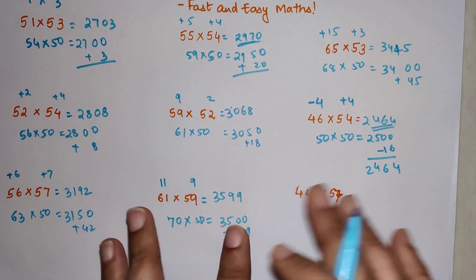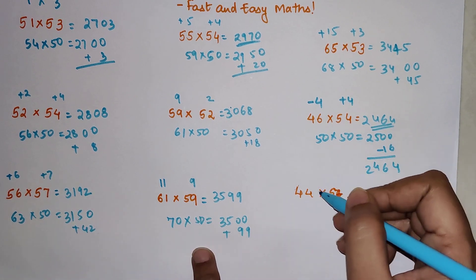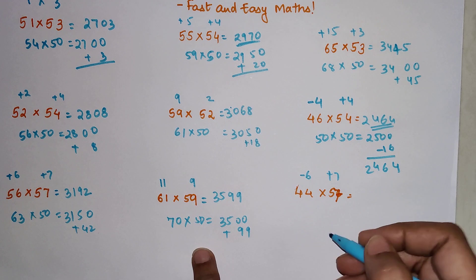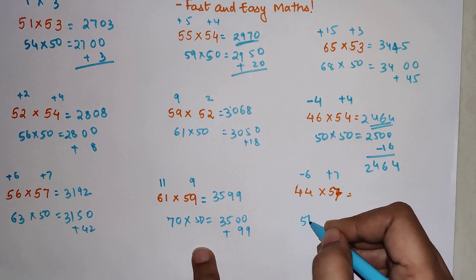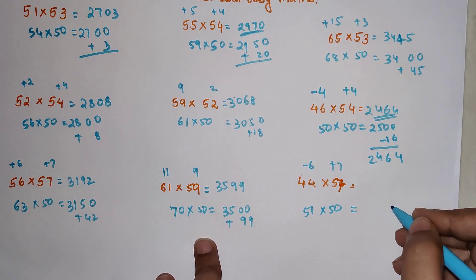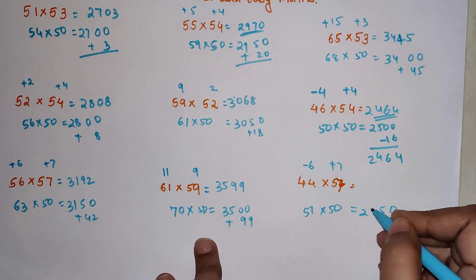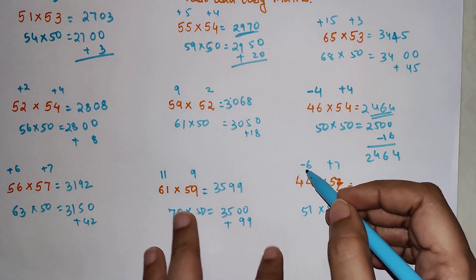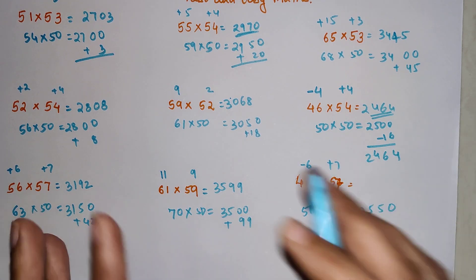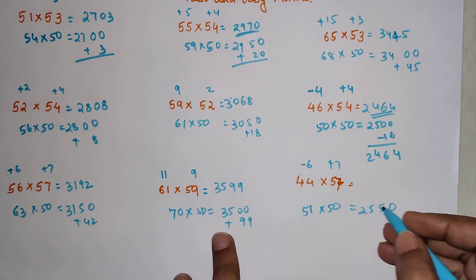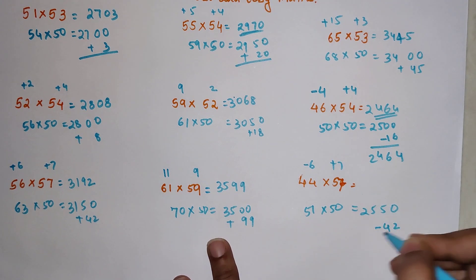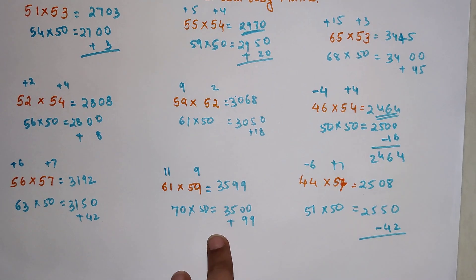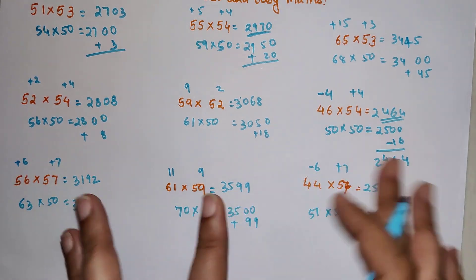I hope you got the hang of it. Here we have minus 6 plus 7, so we have 51 times 50, which is 2550. This is minus 6 times plus 7, so your answer now changes to negative 42. When you subtract, you get 2508.